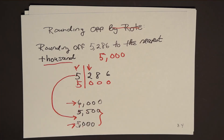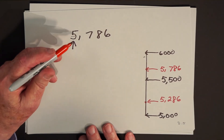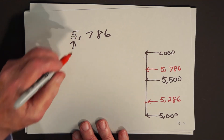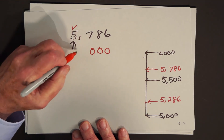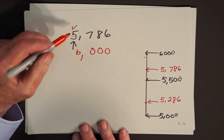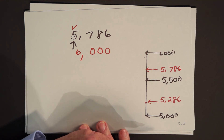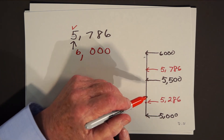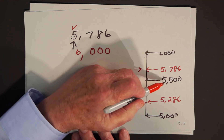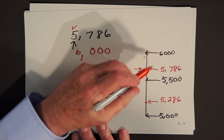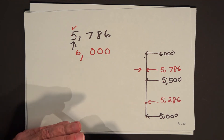Suppose the problem had been: round off 5,786 to the nearest thousand. The mechanical way: check the thousands digit, replace everything to the right by zeros, and since 7 is more than 5, make the thousands digit a 6. Answer: 6,000. Logically: 5,786 comes up after 5,000 but before 6,000; halfway is 5,500; and 5,786 is in the half between 5,500 and 6,000, so it's closer to 6,000. That's basically what rounding off is.